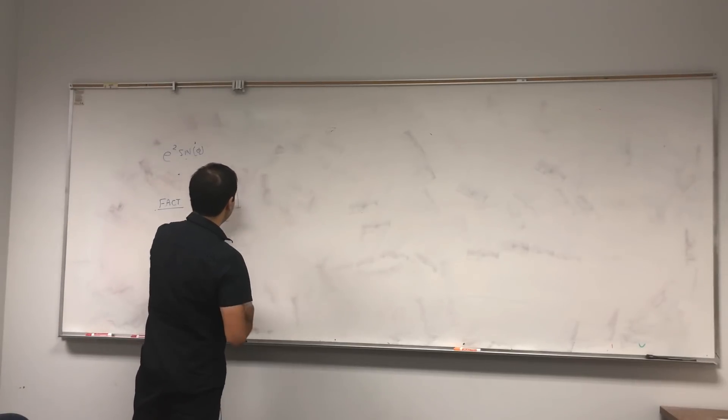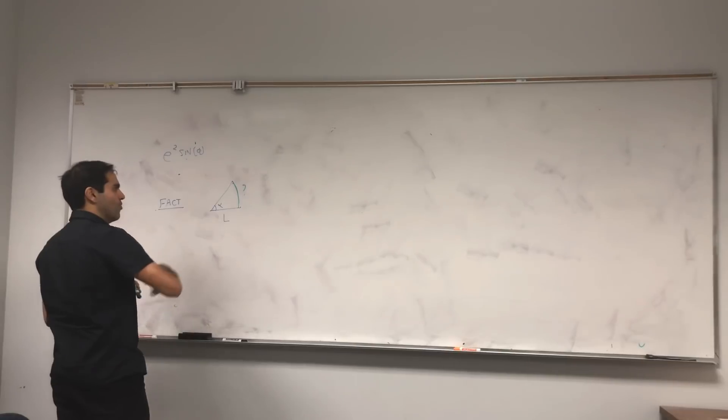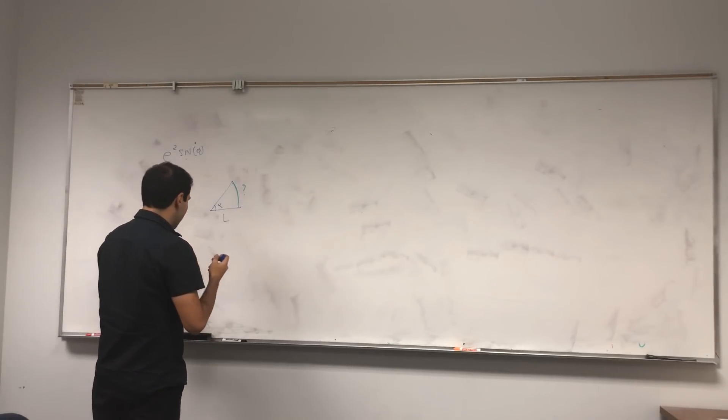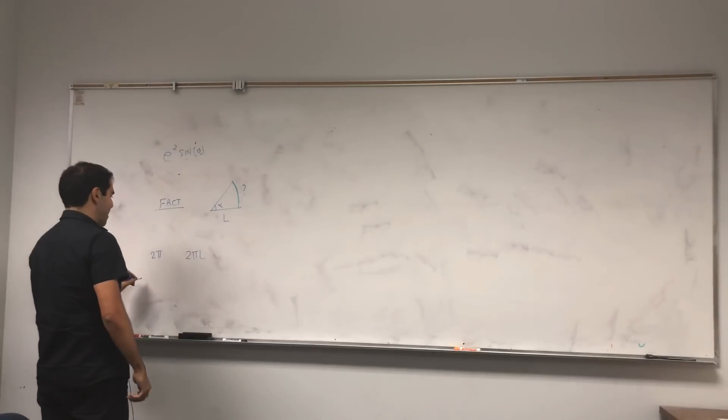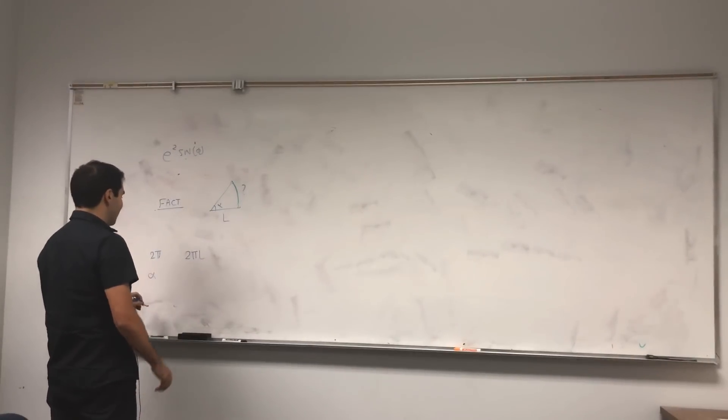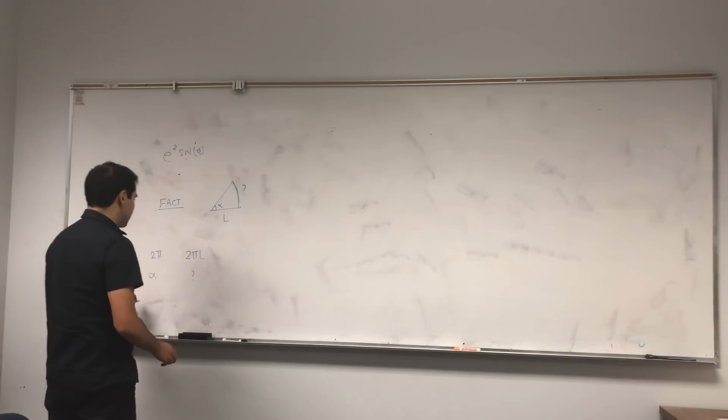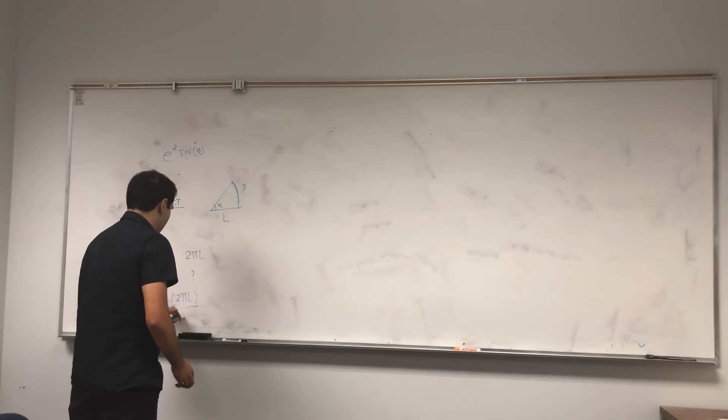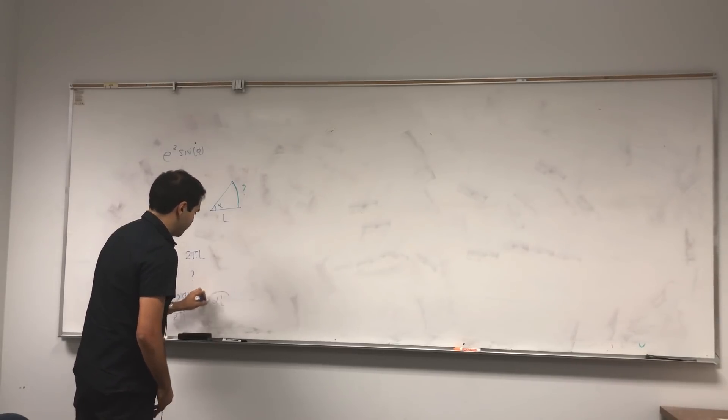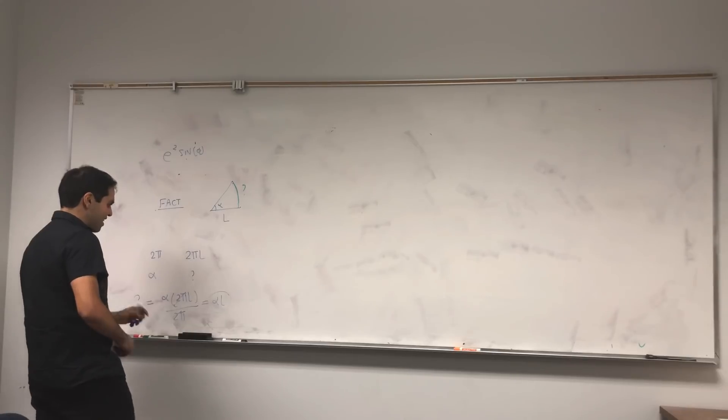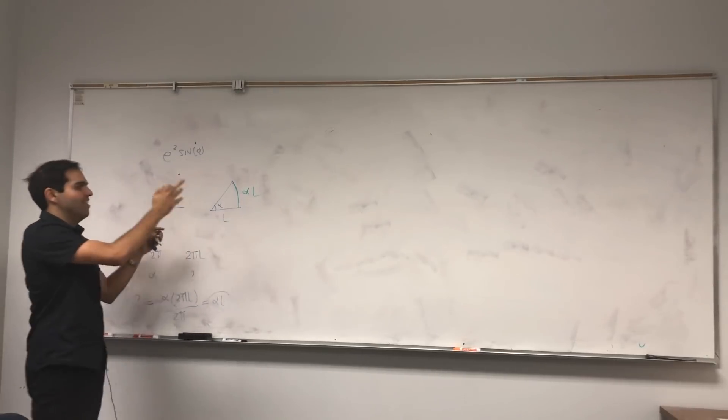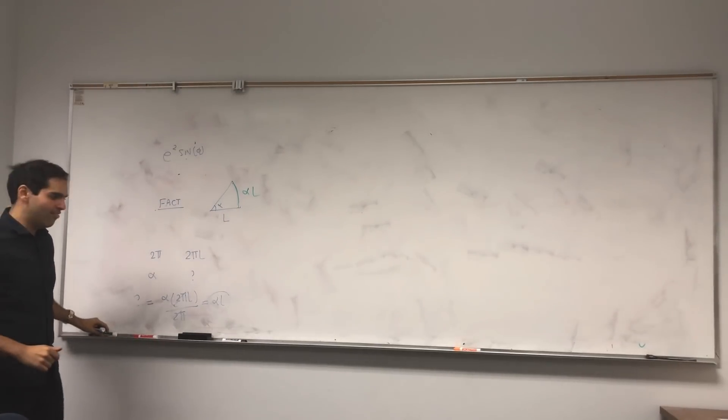I don't know if you know this or not. Suppose you have a wedge of length L and angle alpha. The question is, what is the length here? What is the length of this wedge? Well, notice, if we had the whole circle, so an angle of 2 pi, then the length would be 2 pi L. And therefore, if we have an angle alpha, the length is what? Well, just cross-multiply alpha 2 pi L over 2 pi, and that's alpha L. It's important to understand that. If you have a wedge of length L and angle alpha, the length is just alpha L.